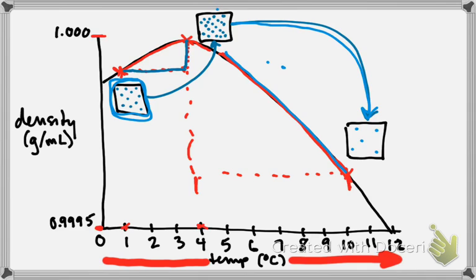The second thing you had to do was compare that graph story to what you expected based on what we've covered about how particles behave. A lot of you rightly pointed out this graph doesn't make complete sense. The dropping part of the curve most of you were comfortable with — as you add energy and increase temperature, molecules have higher kinetic energy, move faster, get farther from each other. Same mass of particles spread over bigger space means lower density. That part makes complete sense.